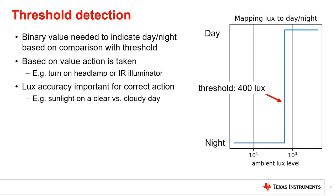Similar to brightness control, the lux accuracy of the sensor is important in making an accurate determination. Therefore, human eye matching is an important sensor specification. This allows similar performance under different light source types — for example, taking the correct action in both clear and cloudy days.